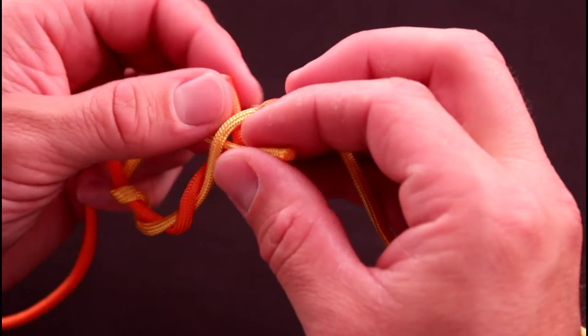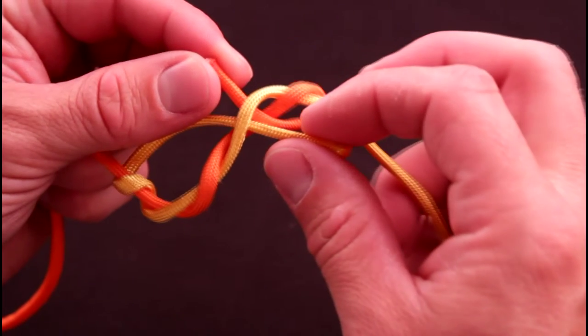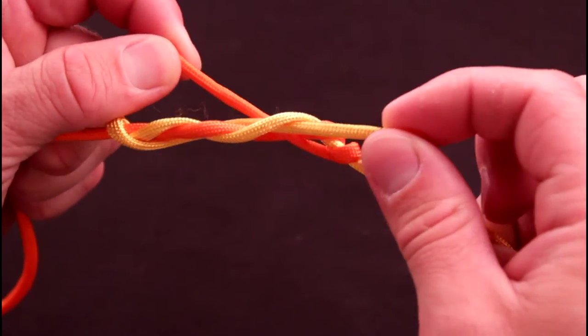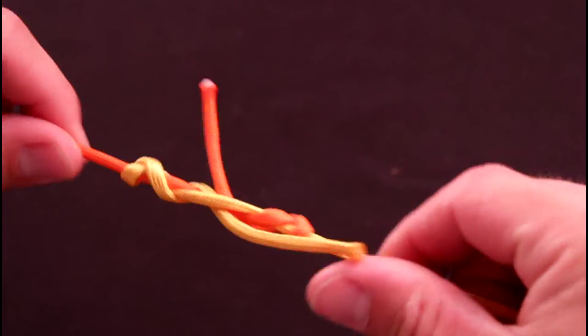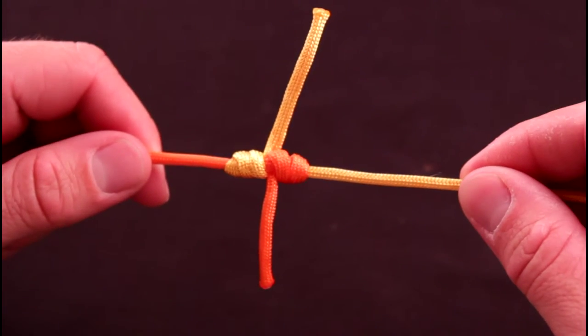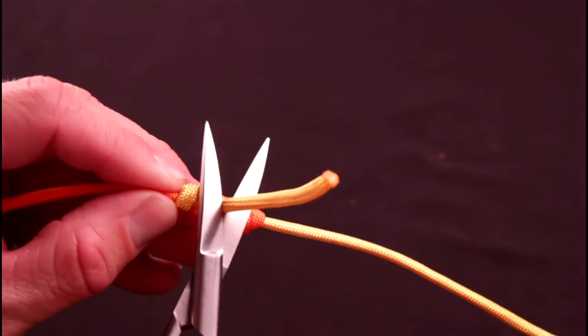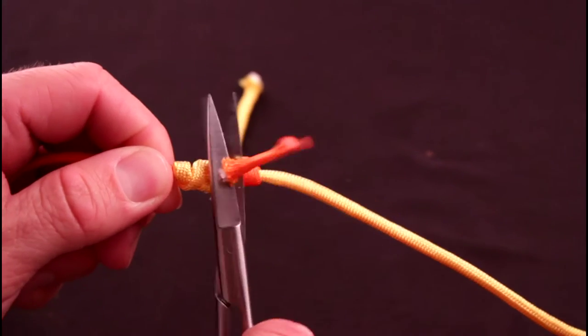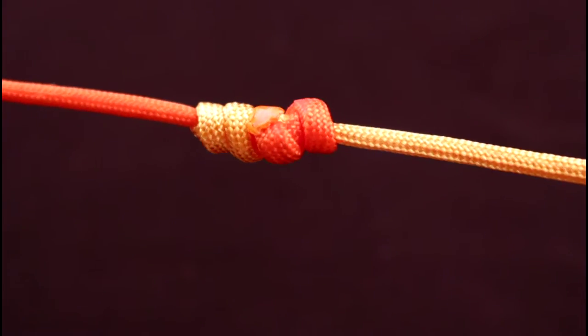Tighten the knot by holding both tag ends and pulling the tippet and leader simultaneously. Trim the tag ends and the blood knot is complete.